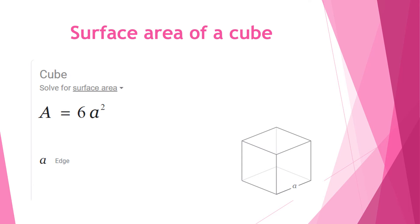To find the surface area of a cube we have to use the formula A equals 6 times a squared, where a represents the edge.